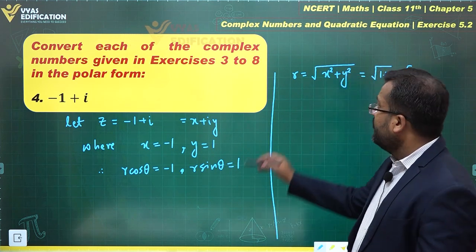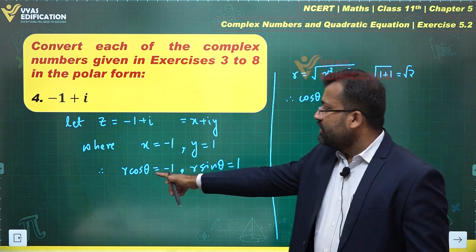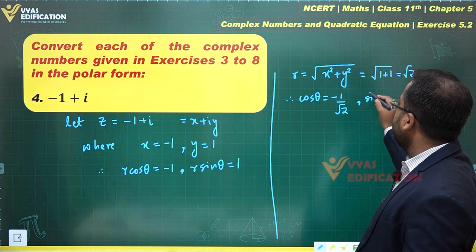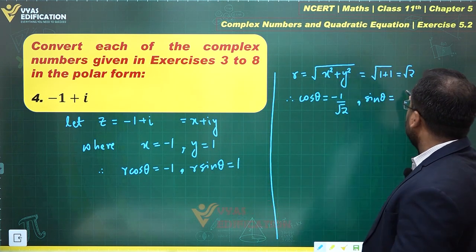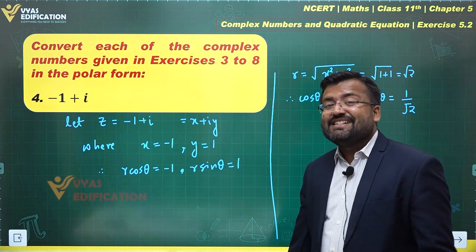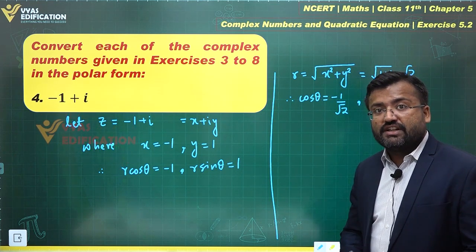Therefore, cos theta becomes equal to minus 1 upon r, which is minus 1 by root 2. Sin theta becomes equal to 1 over r, which is 1 over root 2. Implying that theta lies in which quadrant? Can you identify the quadrant? Cos theta is negative, sin theta is positive.